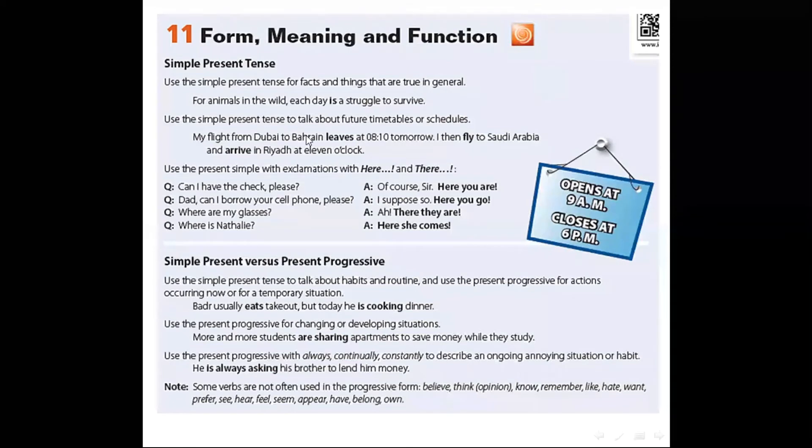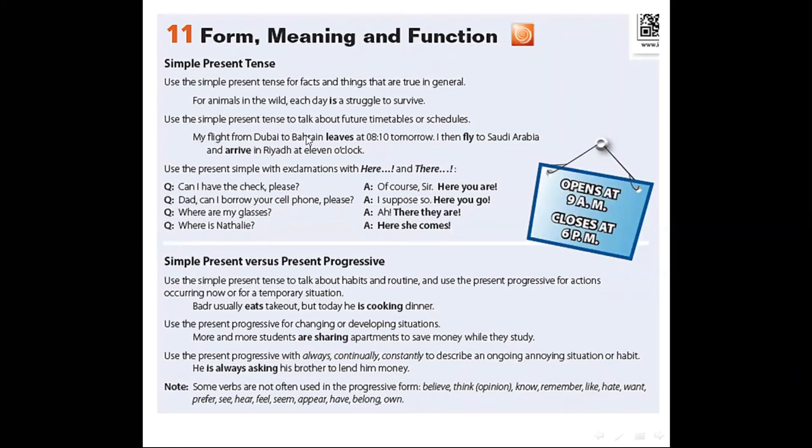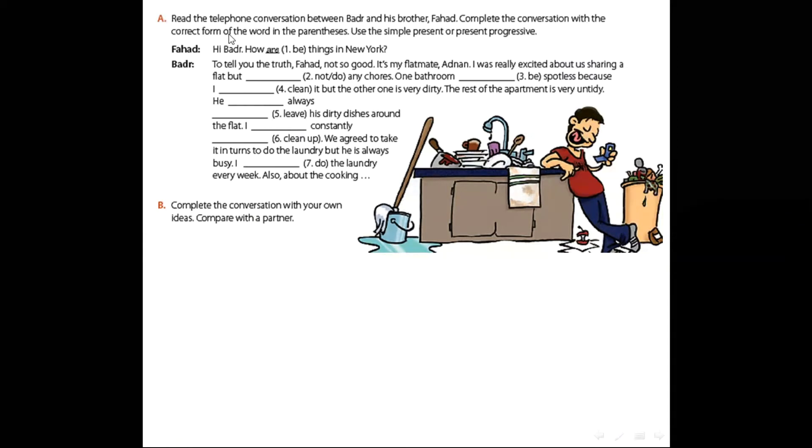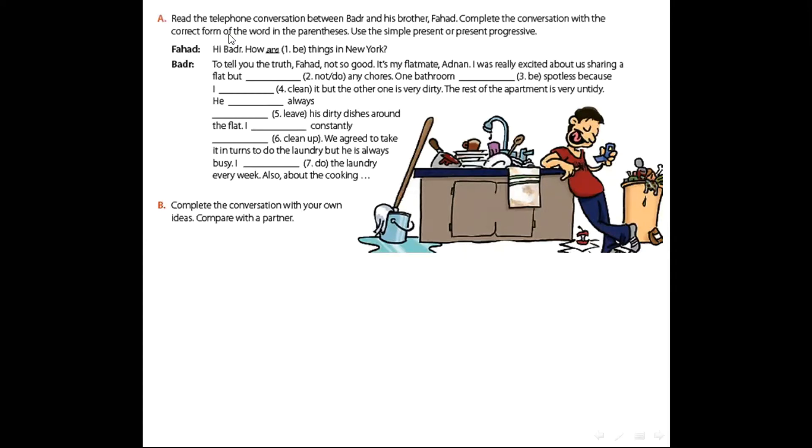Now, we will discuss exercise number A. Read the telephone conversation between Badr and his brother, Fahad. Complete the conversation with the correct form of the words in the parentheses. Use the simple present or present progressive. What do you think this conversation about? Excellent. It's about Fahad and his flatmate, about their chores. They live in a mess, chores like cleaning, washing. Let's start this conversation.